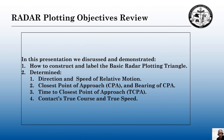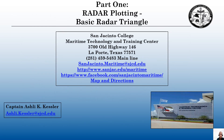Let's review our radar plotting objectives. In this presentation, we discussed and demonstrated how to construct and label the basic radar plotting triangle, then determined: one, the direction and speed of relative motion; two, the closest point of approach, or CPA, and bearing of CPA; three, the time to closest point of approach; and four, the contact's true speed. If you have any questions about this video, you're welcome to email me at ashley.kessler@sjcd.edu.